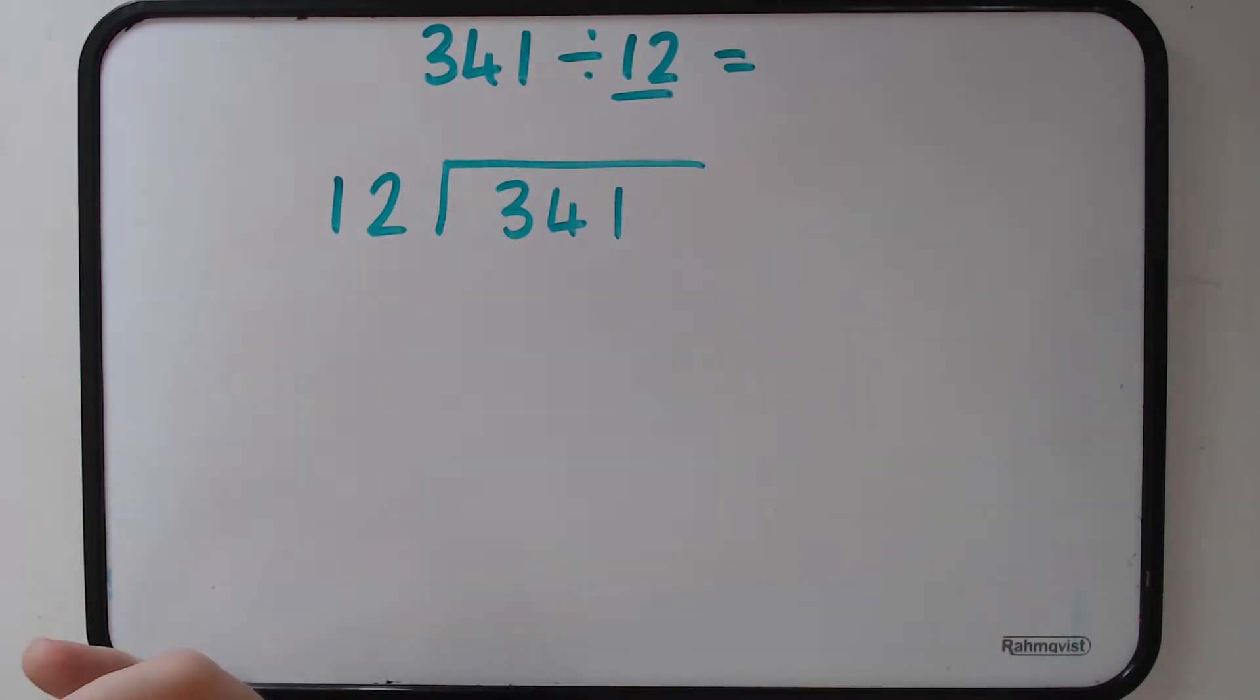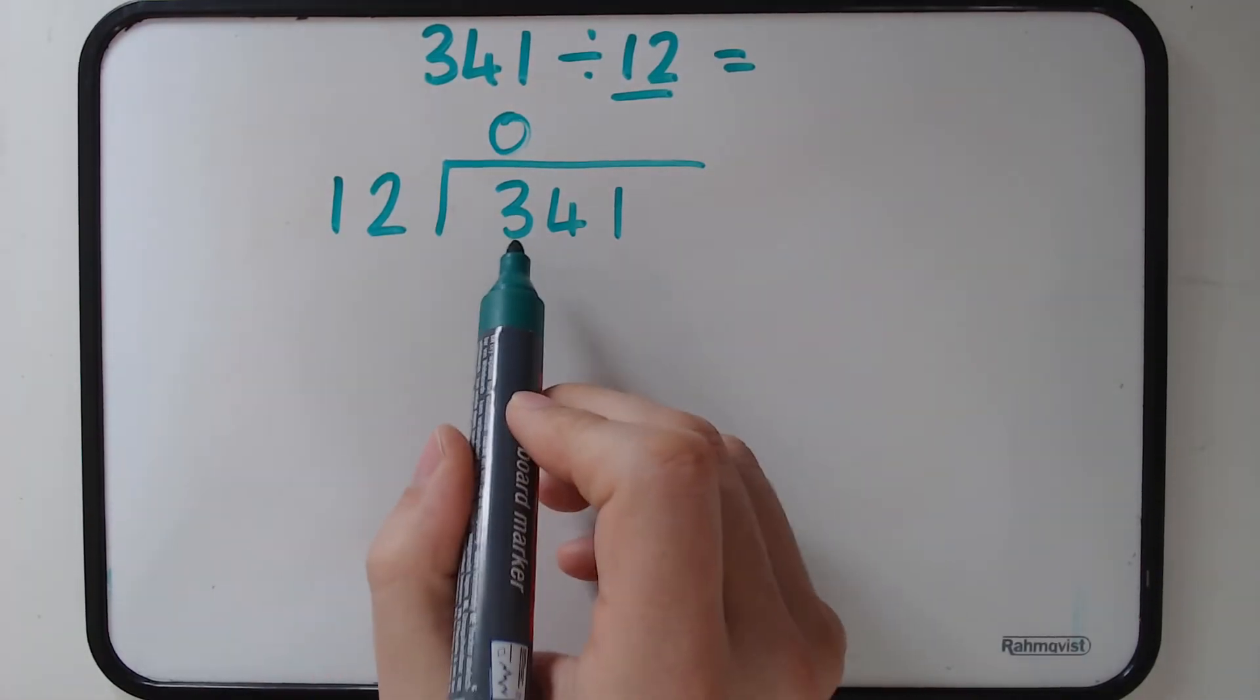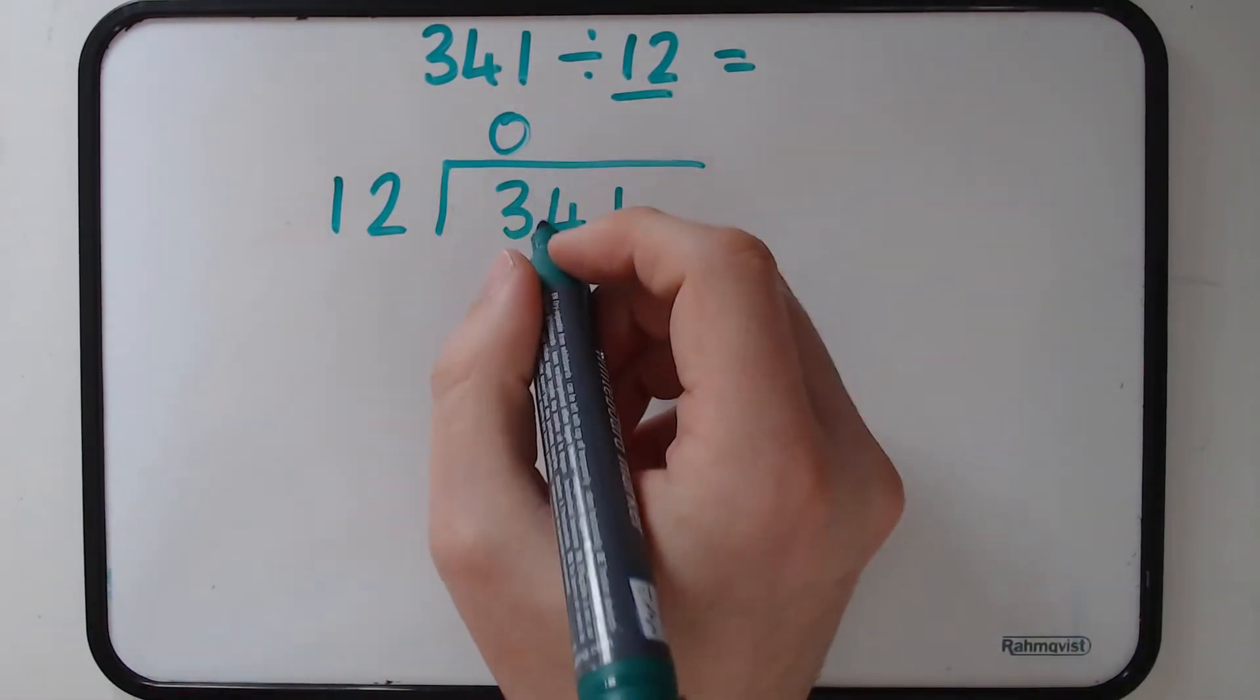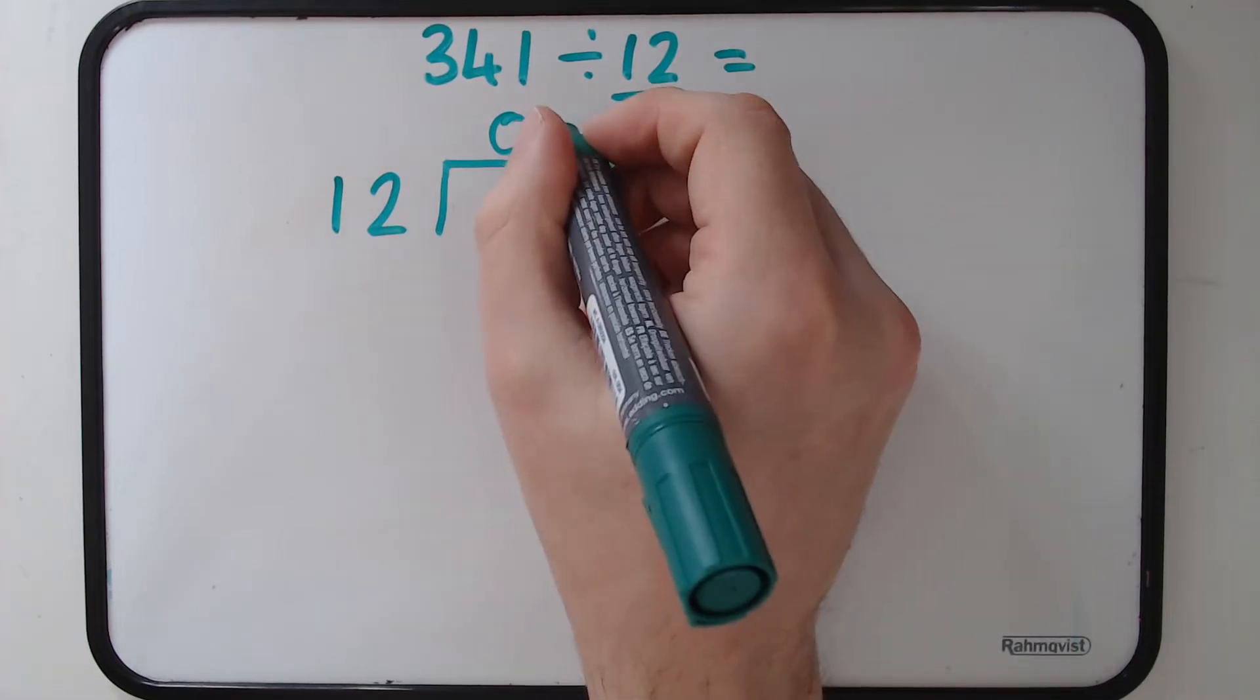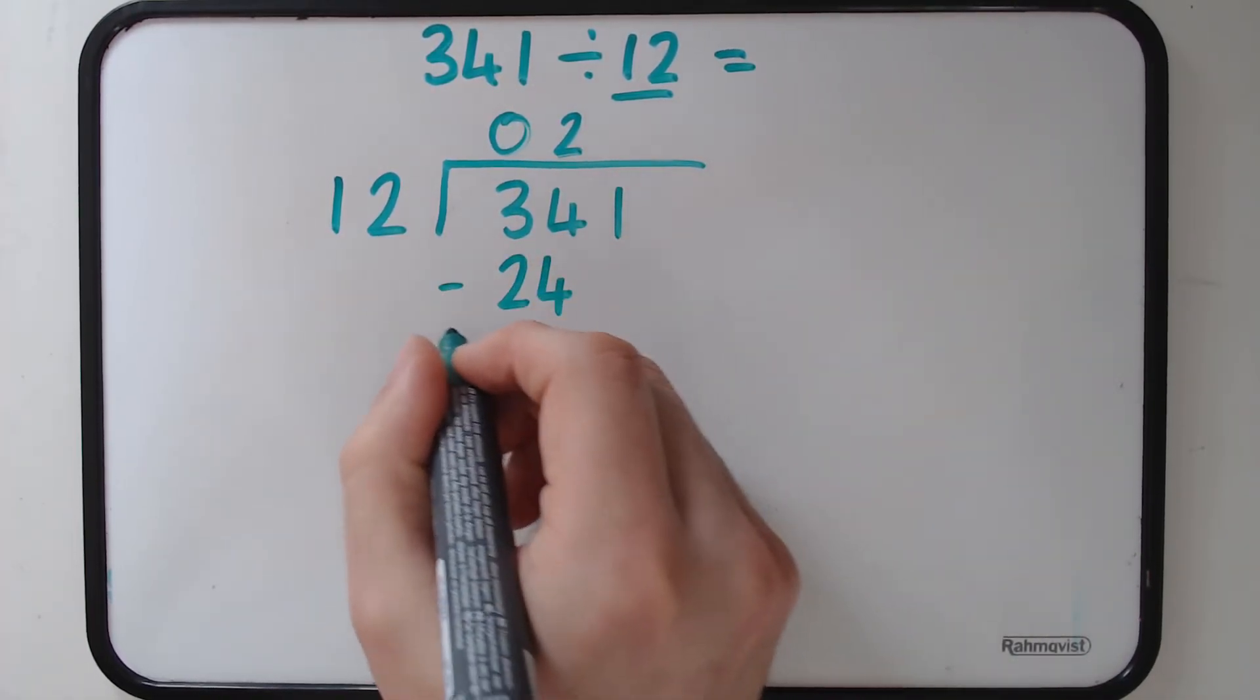Now we need to be careful because now we're seeing how many 12s go into those numbers. 12s into 3 doesn't go. So 0. It's now 12s into 34. Knowing my 12 times table I know that I can fit in 2 because that will give me 24. And so I'm going to take away 24 from the 34 and that leaves us with 10.